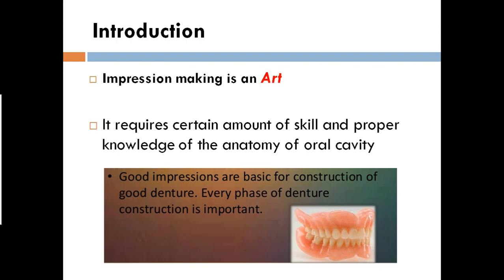Unless you master it, you cannot get a proper one. It requires a certain amount of skill — you keep on practicing. Knowledge of the oral anatomy on which you make the impression, including maxillary supporting structures, mandibular structures, etc., is essential. In complete denture, there are usually five to six steps, starting from examination, case history, and planning fabrication. The first step is making a preliminary impression. Each and every step in fabrication of complete denture is important. Good impressions are basic for construction of a good denture.